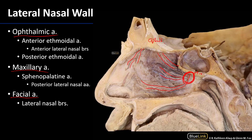Finally, we have a lateral nasal branch that can make its way into the nose — these are branches of the facial artery. The lateral nasal branch is the branch immediately following the superior labial branch, and some of its terminals can enter the nasal cavity. So we have the same pattern from the same sources supplying the lateral wall as we did the nasal septum: the ophthalmic artery superiorly, and the maxillary artery posteriorly.